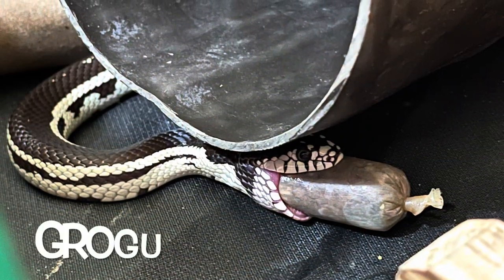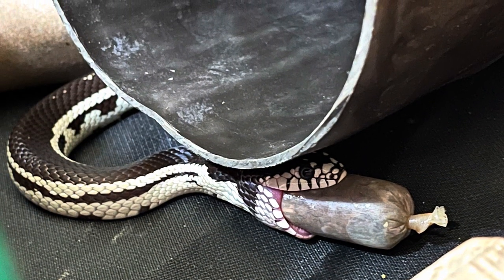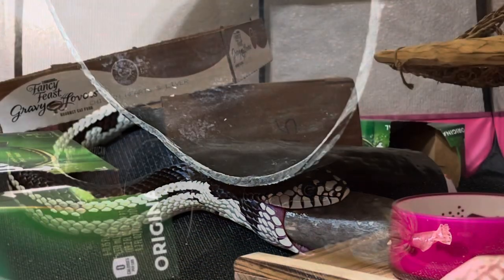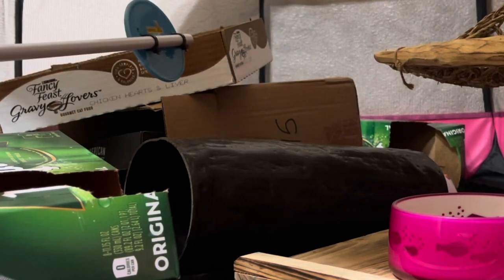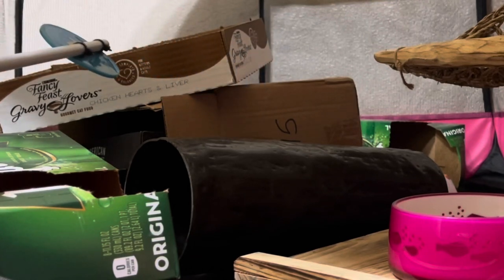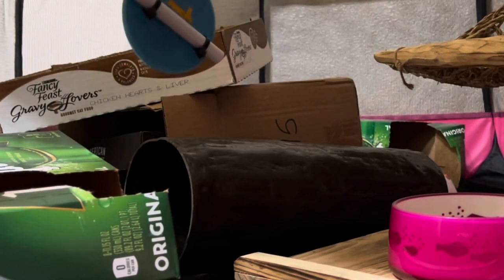Hi everybody, I'm Lori with Behavior Education at Spirit Keeper Animal Sanctuary. This week what's happening is our California king snake Grogu had been out of his enclosure for an exercise session and enrichment activity in this tent.